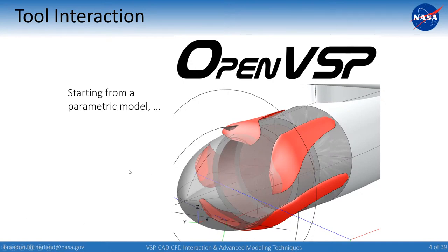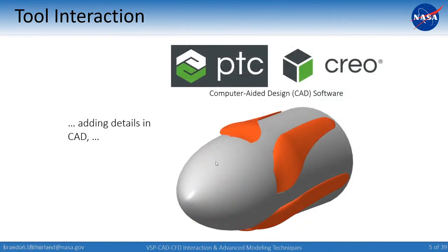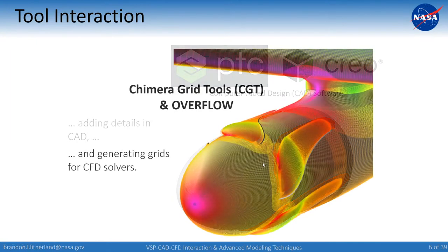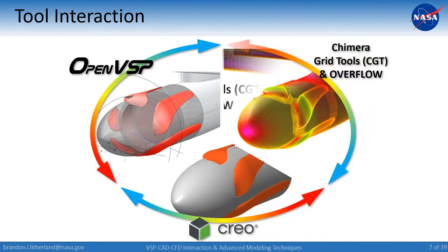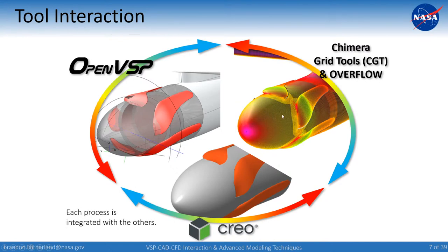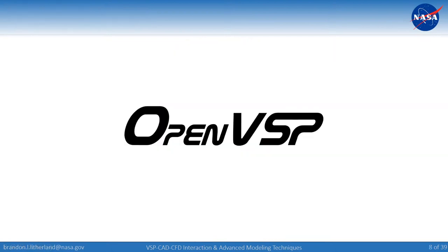The idea is we start from a parametric model, add details in CAD, and then generate grids for CFD solvers. It's an iterative design change among different tools — each is good for one thing, another performs another task very well. Each tool is used to its individual strengths. Don't try to brute-force things in VSP if you don't have to.